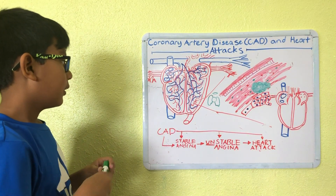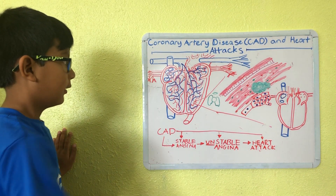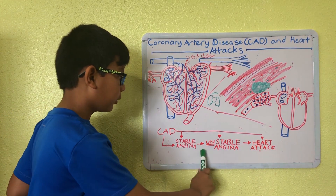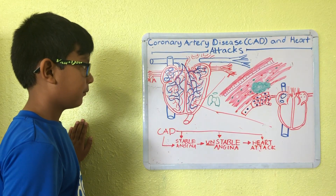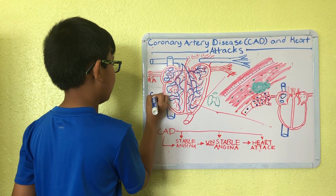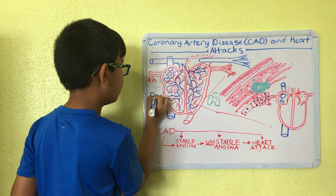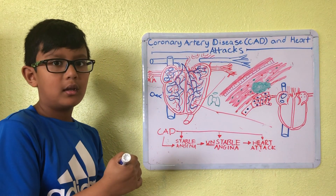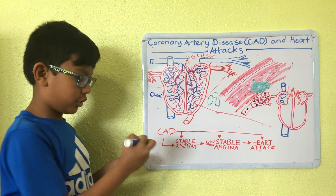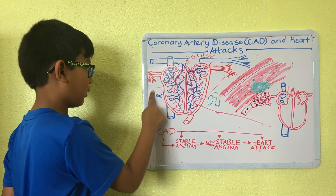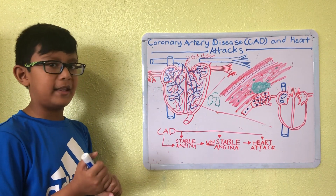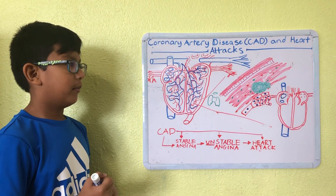Coronary artery disease can lead to some problems. For example, this will lead to stable angina. In stable angina, let's say you're just lying down — there's not going to be any pain, because the body is at rest and there's not going to be a lot of blood rushing through. But maybe you're in a race and you need to push hard.